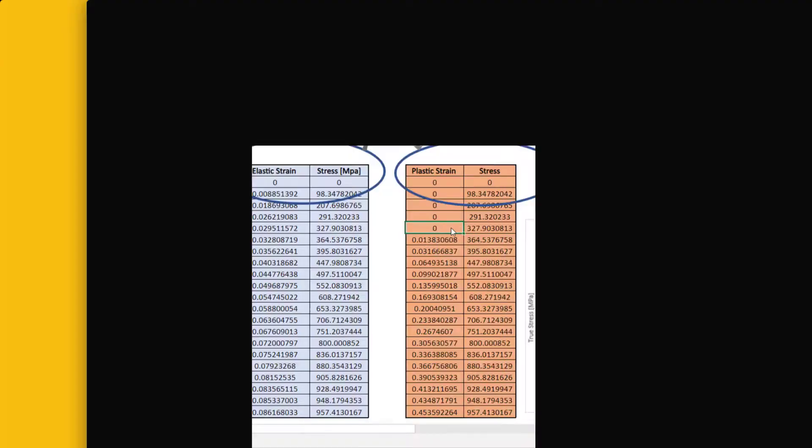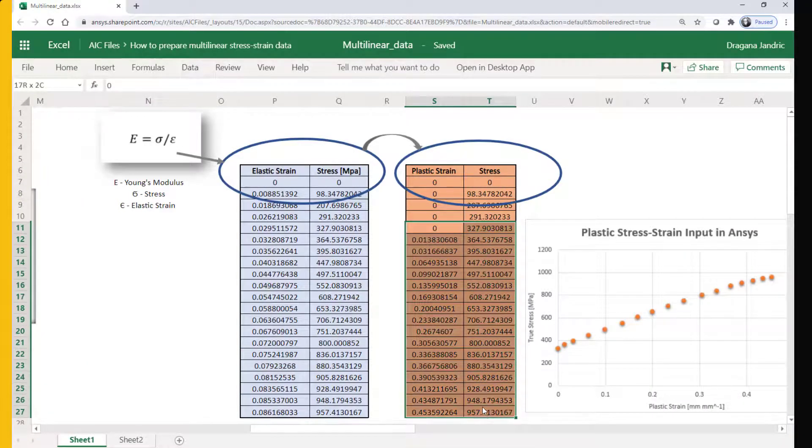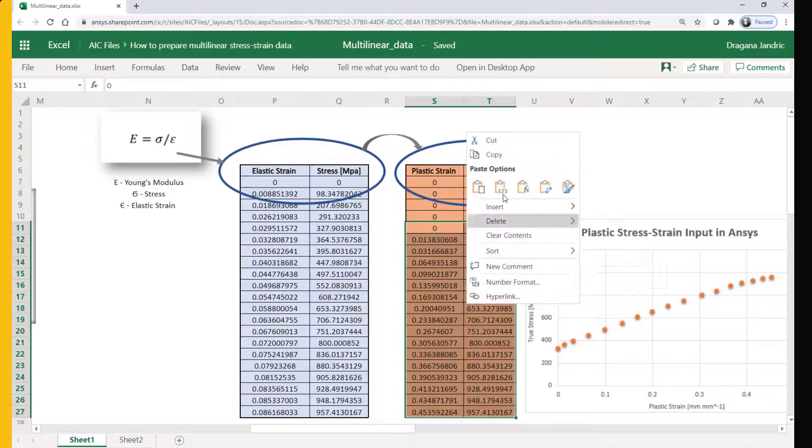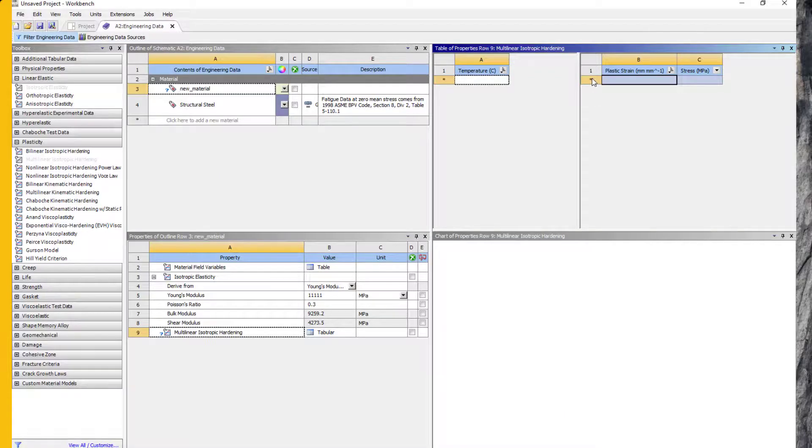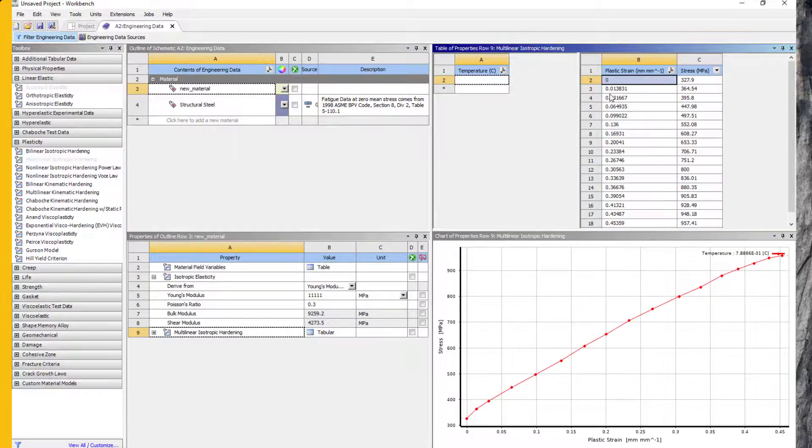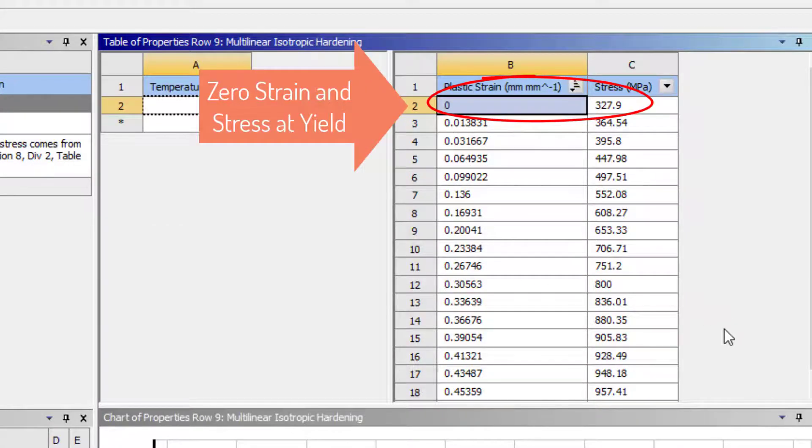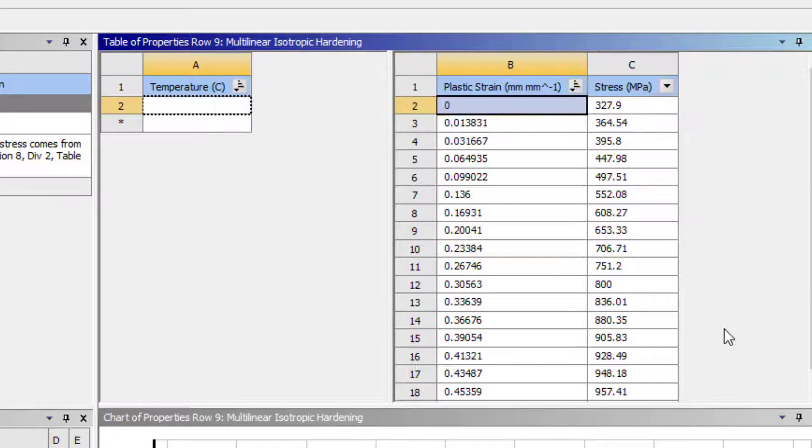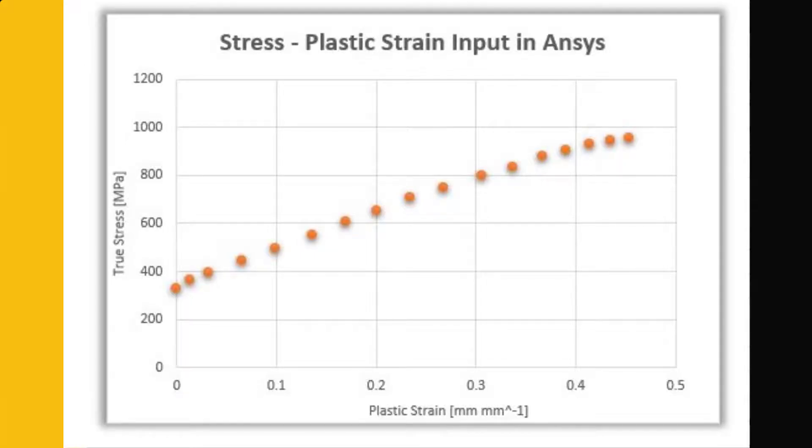Next, insert multilinear isotropic hardening to define plastic behavior. Before copying the data, make sure that the units for stress match your data. If everything looks good, go ahead and copy and paste the data. Note that the first point in this table should be zero plastic strain and stress at the yield point. The stress-strain curve should be monotonically increasing. So, we must identify the region where it begins to dip down and discard that portion of the data. In other words, negative slope of the plastic strain-stress curve is not allowed in the standard plasticity models.